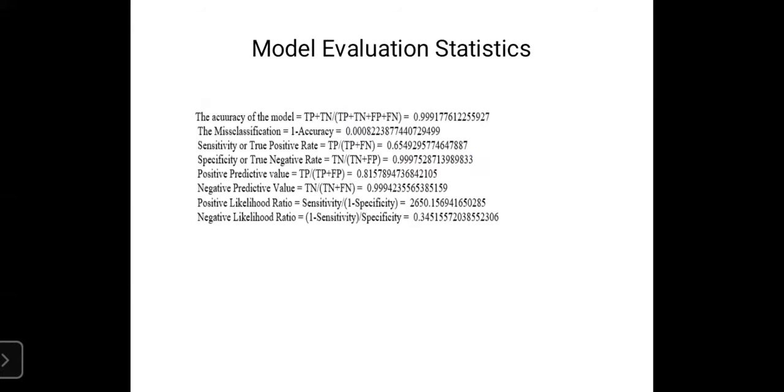Here, I have included all the model evaluation statistics, including the accuracy, misclassification, the sensitivity that is the true positive rate, and specificity that is the true negative rate. We observed that the positive likelihood ratio and the negative likelihood ratio is also good enough, because the positive likelihood ratio is about 2650. If the value is larger of positive likelihood ratio, then it means the probability is higher that the fraud is tested positive.